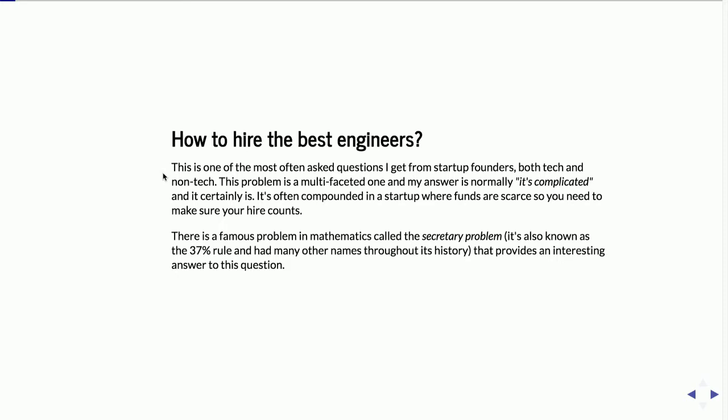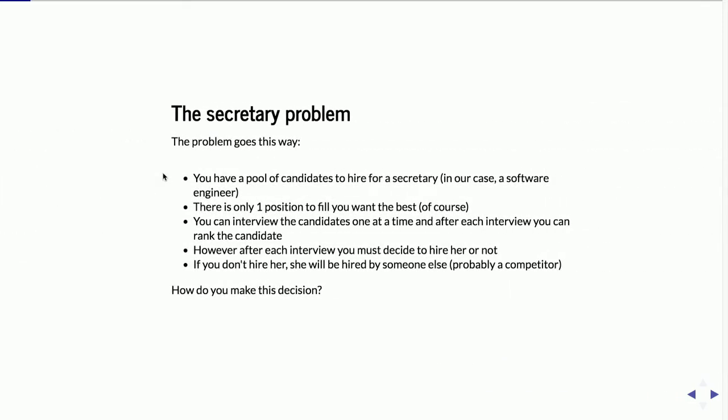One very popular name for it is called the 37% rule, and you'll get to know why shortly. Basically, you have a pool of candidates you want to hire for a position — in this case, a software engineer. It's only one position. You can interview candidates one at a time, and after each interview you can rank them. After ranking and doing the interview, you must decide whether to hire that person or not, because if you don't, the candidate will be hired by somebody else.